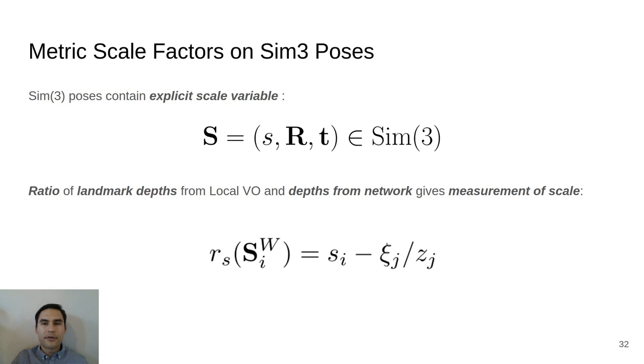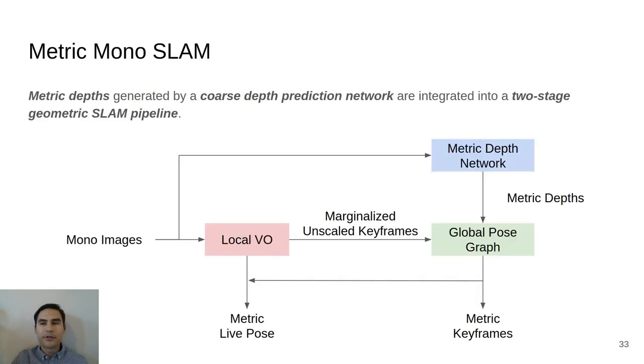A flowchart of our entire pipeline is shown here. Monocular images are first processed by our local visual odometry module that generates accurate but unscaled keyframes. When these keyframes are marginalized out of the sliding window, they are then fed into a global pose graph that integrates metric depth measurements from our coarse metric depth prediction network. The fused metric keyframes can then be used to scale the output of the local VO module to achieve a live metric pose of the camera. By integrating the metric information encoded in the network in this way, we can achieve metric solutions without any additional sensors, compute, and without ignoring the constraints observable in the image data.